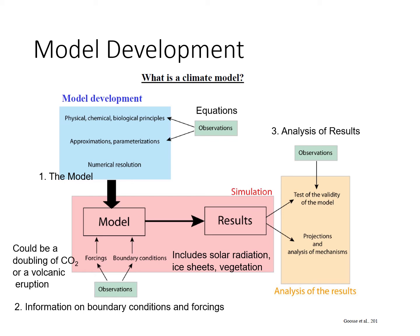There are three components to development of climate models. The first is the model itself, which is a computational model of the Earth's climate system based on the laws of physics. The second is information. Climate models require information about boundary conditions, that is conditions describing the present state of the Earth, and a forcing, for example, a doubling of carbon dioxide.